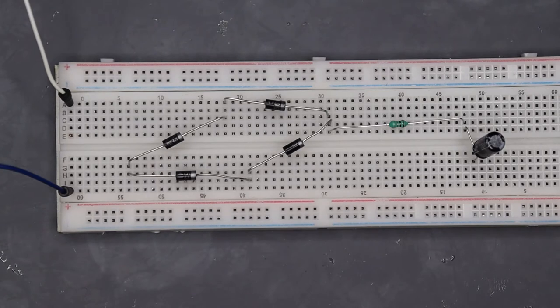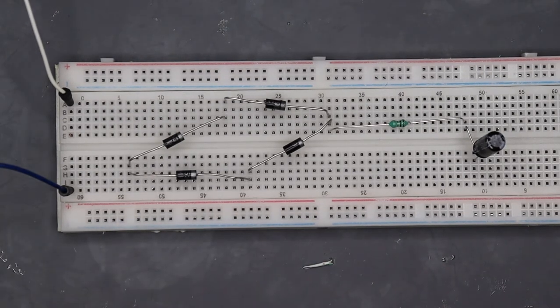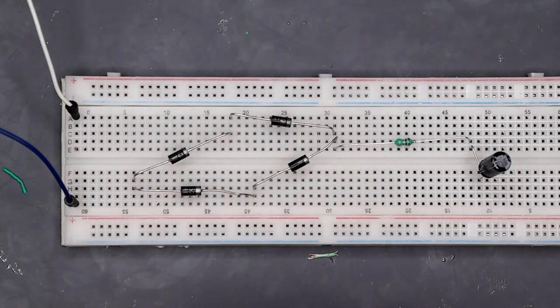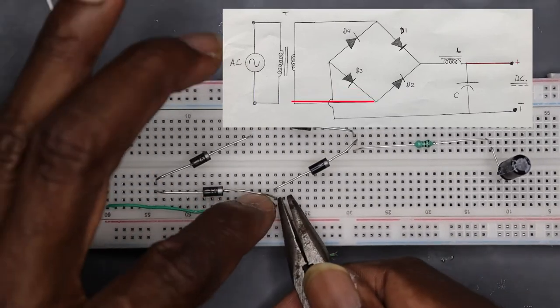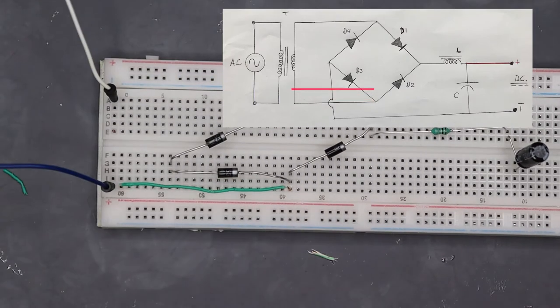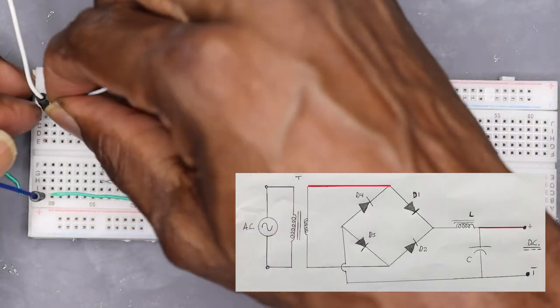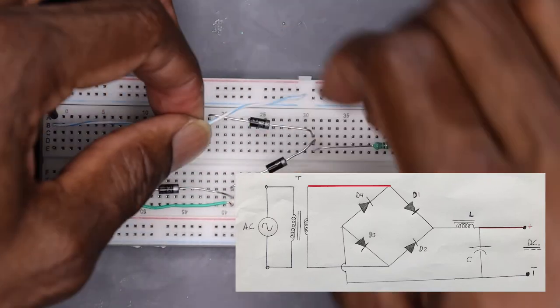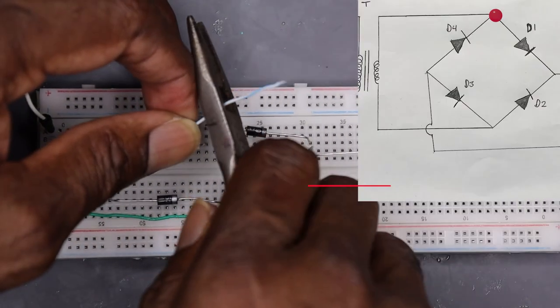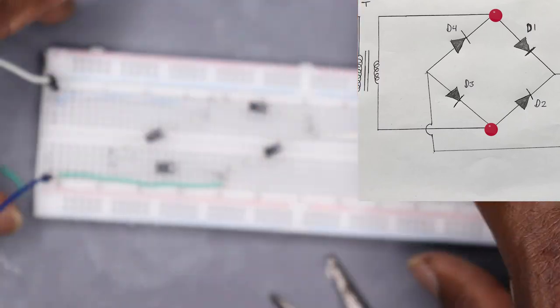I'll now connect one end of the terminal coming from the transformer, then I'll connect the other end coming from the secondary terminal of the transformer. Both ends must be connected between cathode-anode of D1 and D4, and cathode-anode of D2 and D3.